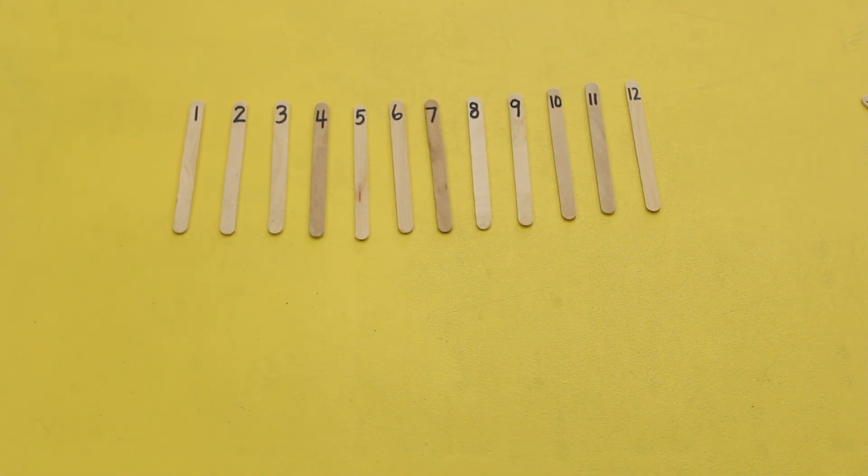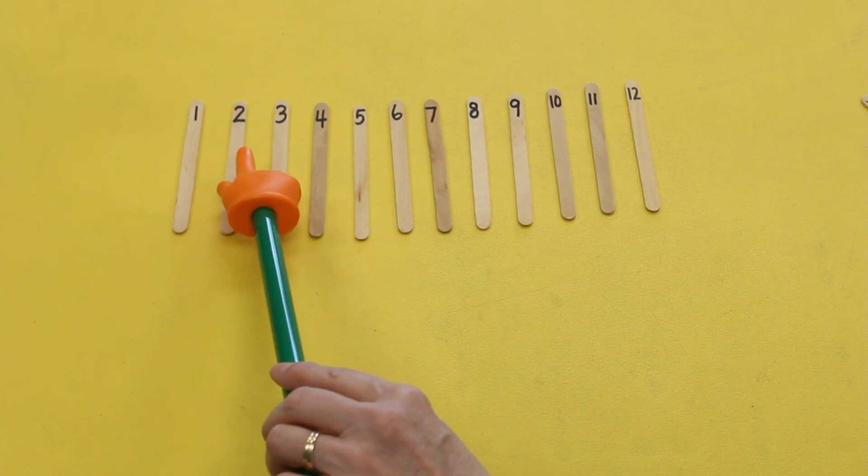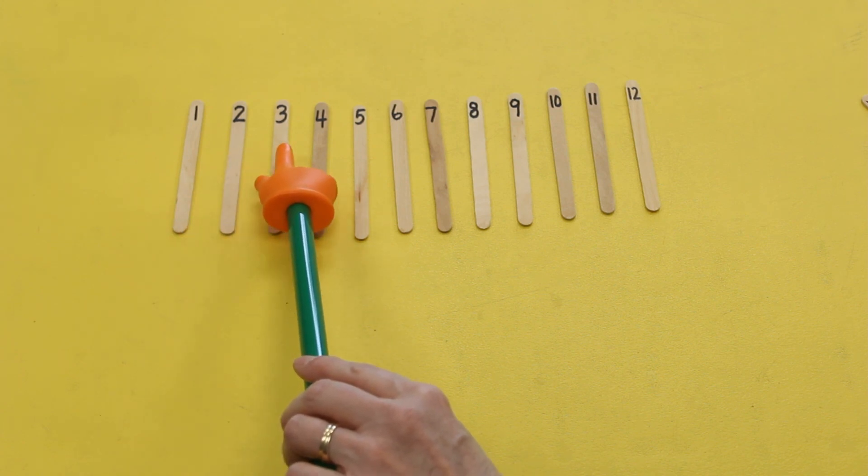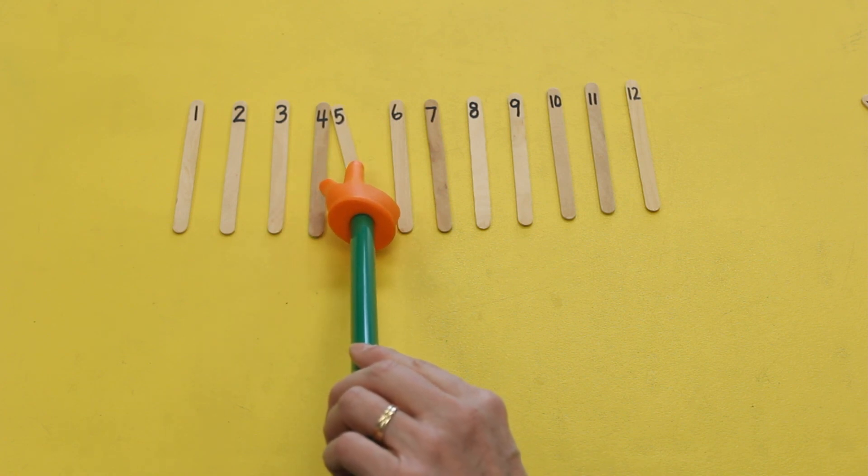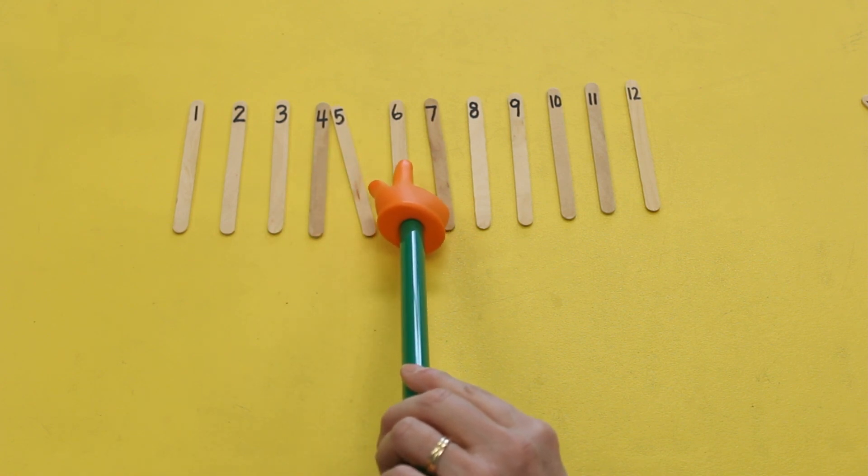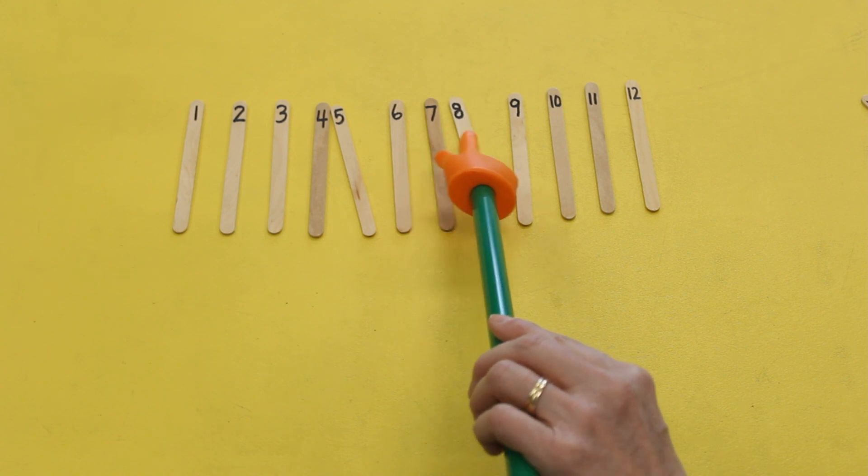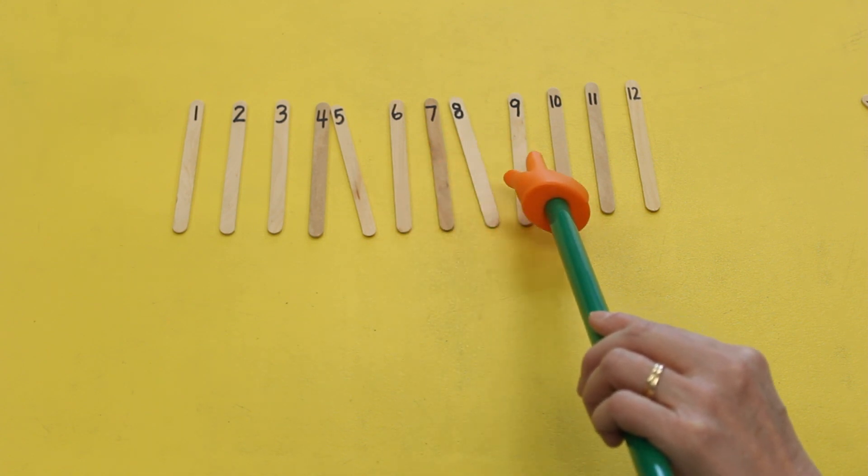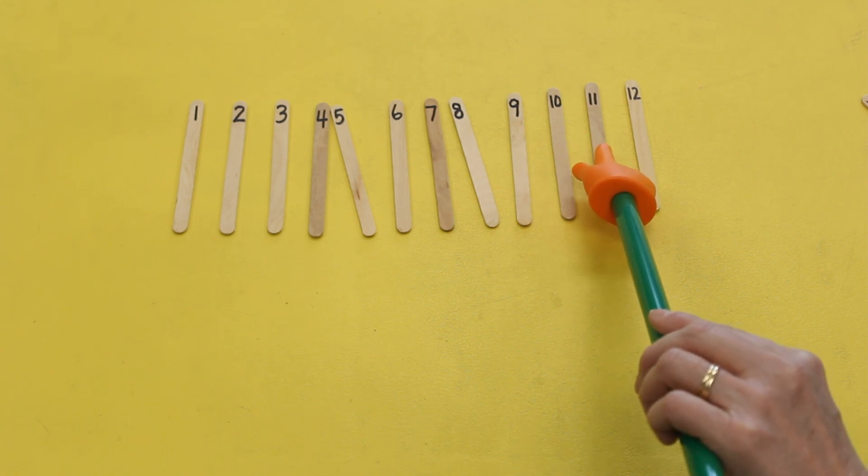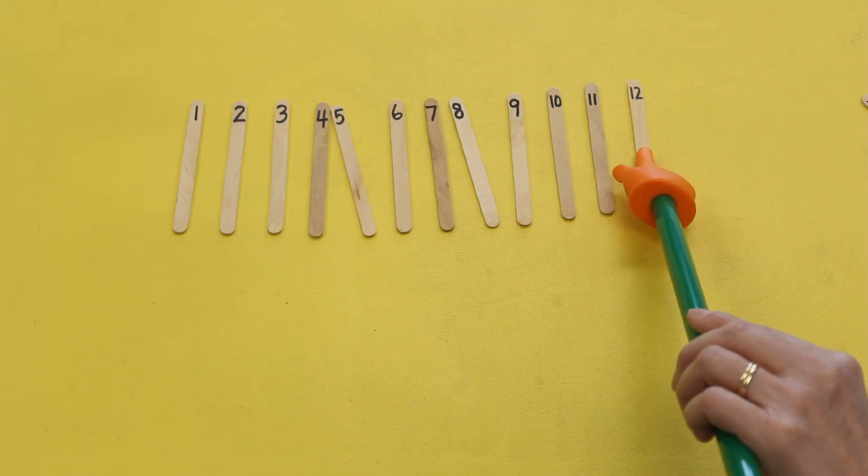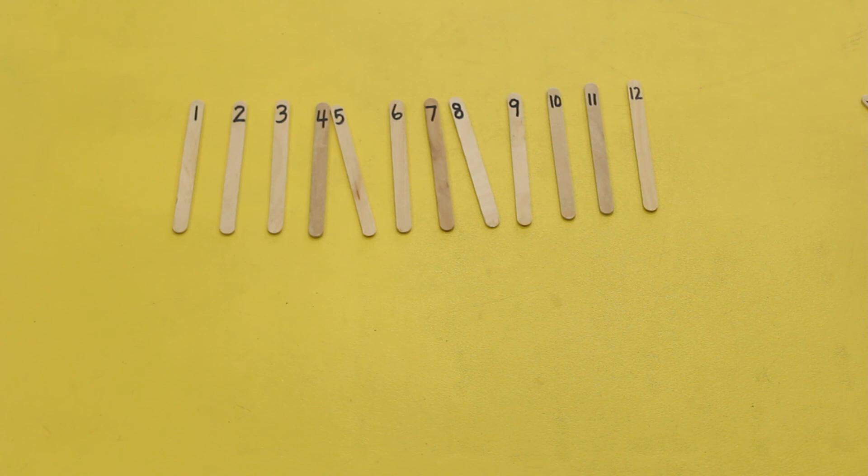Let's start with one: one, two, three, four, five, six, seven, eight, nine, ten, eleven, twelve. Excellent.